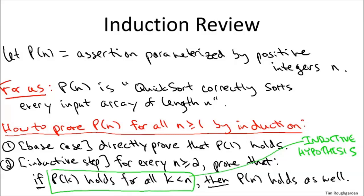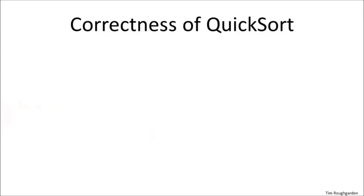So those are proofs by induction in general. Now let's instantiate this proof format. So let me write again what is the assertion we care about. Our definition of P(n) is going to be the QuickSort is always correct on arrays of length n. And of course what we want to prove is that QuickSort is correct no matter what size array that you give it, that is we want to prove that P(n) holds for every single n at least one, so this is right in the wheelhouse of proofs by induction.